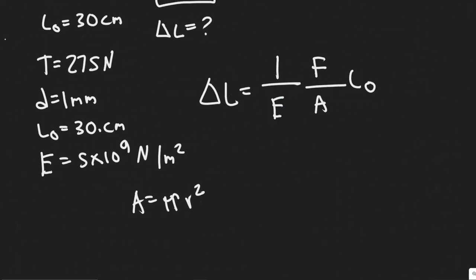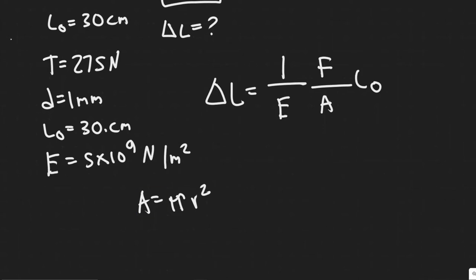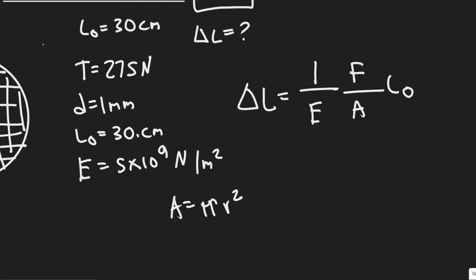And then E, if you look in your textbook, they're going to give you values for Young's modulus. So it's going to be different depending on the material. So in this case, for nylon, the Young's modulus is 5 times 10 to the 9. The units are Newtons per meter squared.